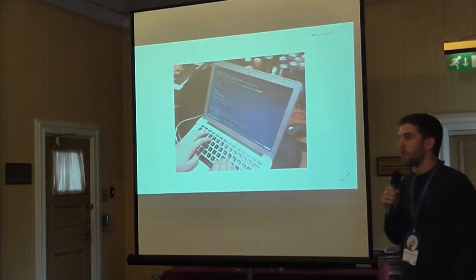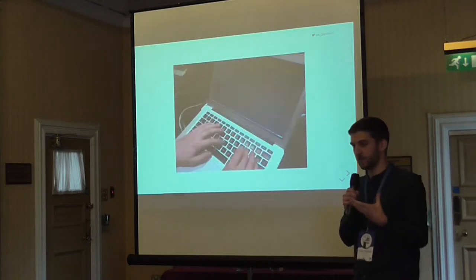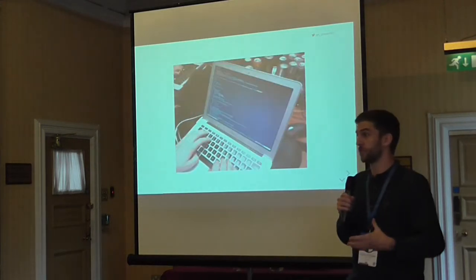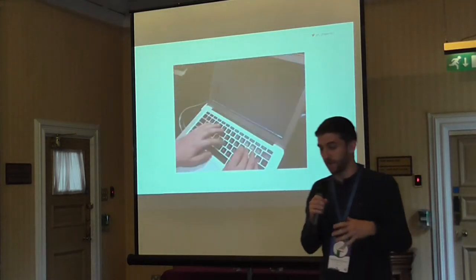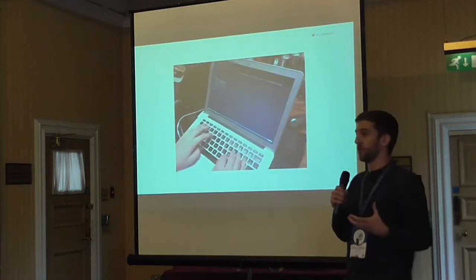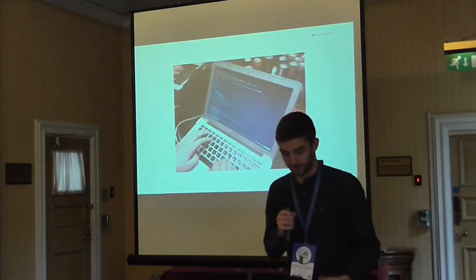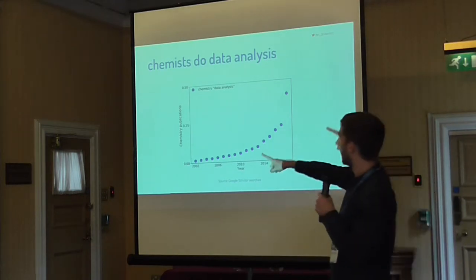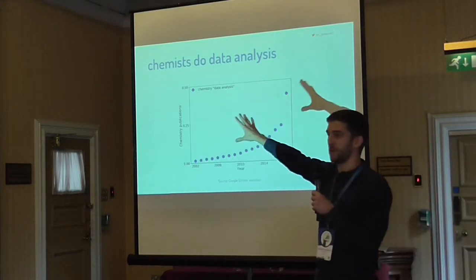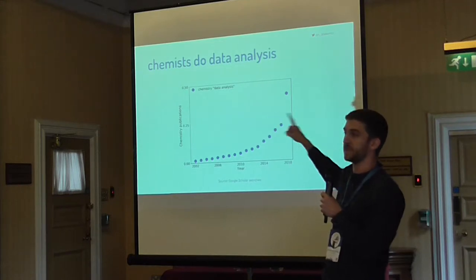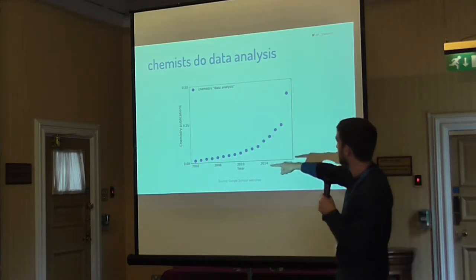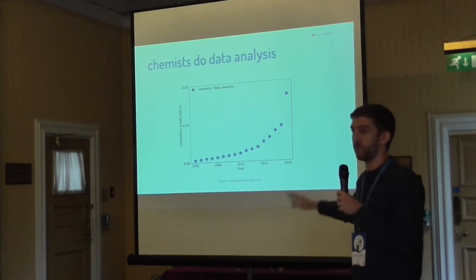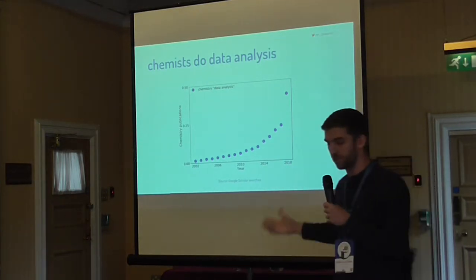It's a lot more common nowadays for chemists to be doing computational work — this is actually what I do today. I'm a computational chemist. I use computers to do chemistry. This is happening more and more as chemistry has become more analytical and a subject about data science and data analysis. This is a plot of the percentage of academic chemistry publications that mention the phrase 'data analysis.' In 2008, about 40% of all academic chemistry publications from all areas — organic, physical, anything — mention some form of data analysis.